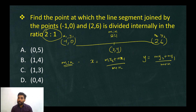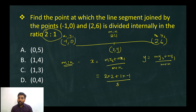For x: m equals 2, x2 equals 2, n equals 1, x1 equals minus 1. So x equals 2 times 2 plus 1 times minus 1 divided by 2 plus 1, which is 4 minus 1 over 3, giving x equals 1.